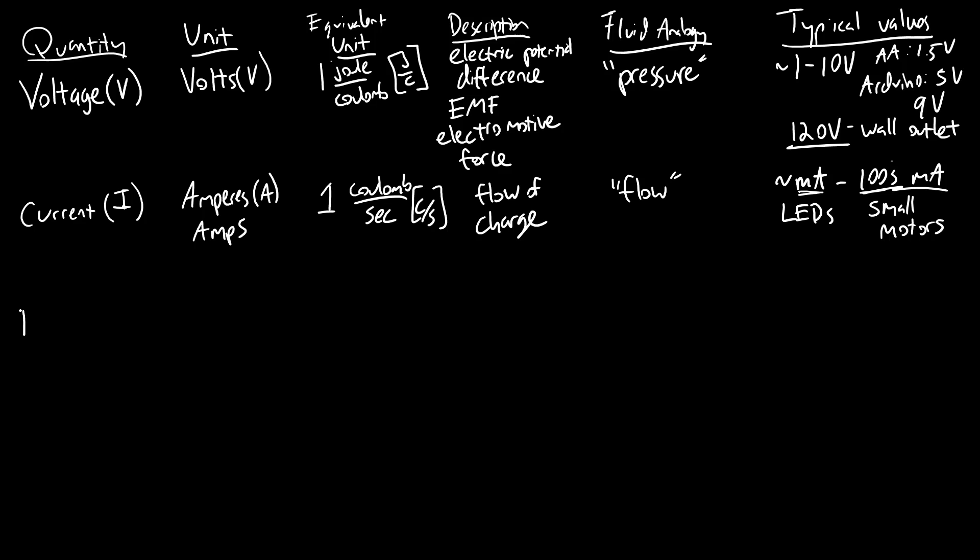Next up, we have resistance, which is abbreviated with an R. That is measured in units of ohms, which are abbreviated with the capital Greek letter omega. One ohm is equivalent to one volt per amp. We'll learn more about that when we talk about Ohm's Law in a future video.